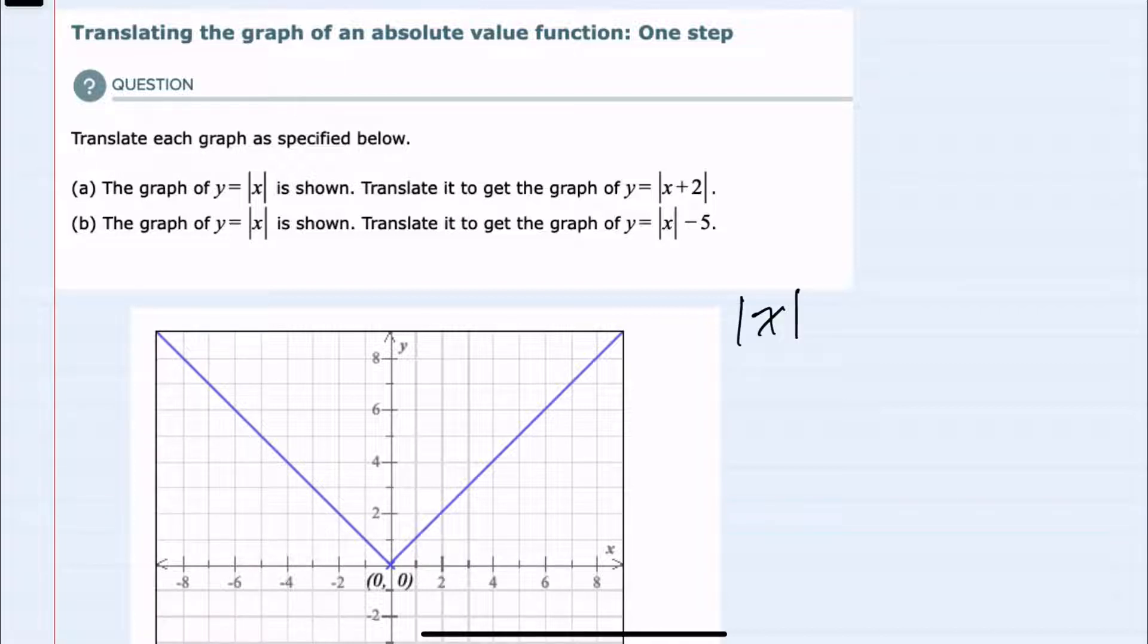To start with, we should recall that if we have an absolute value of x, if we add a constant to that absolute value of x, this will translate up. If we subtract a constant, this will translate the absolute value function down.